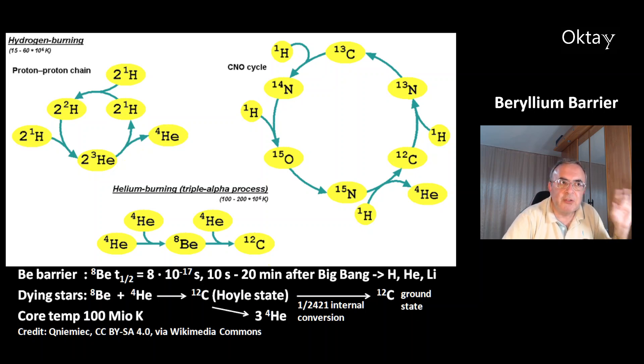Then you can continue the nucleosynthesis. You can make oxygen, neon, magnesium, sulfur, etc. For this, you need a core temperature of 100 million Kelvin. For comparison, the sun's core temperature today is 15 million Kelvin.